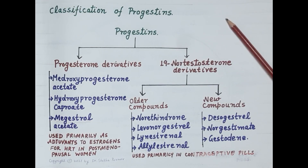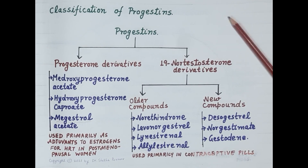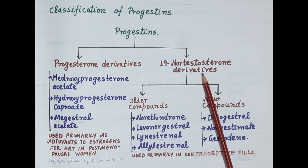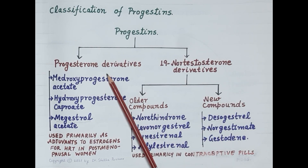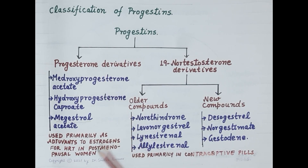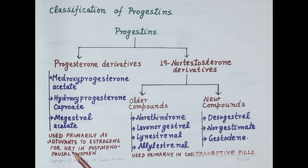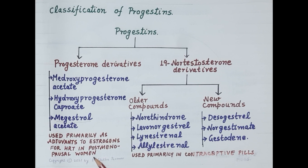Progestins are classified as progesterone derivatives and 19-nortestosterone derivatives. Progesterone derivatives are pure progestins; they exhibit weak anti-ovulatory action and are used primarily as an adjuvant to estrogen in hormone replacement therapy for postmenopausal women. Importantly, progesterone counteracts the risk of endometrial carcinoma associated with estrogen, and therefore progesterone is combined with estrogen.